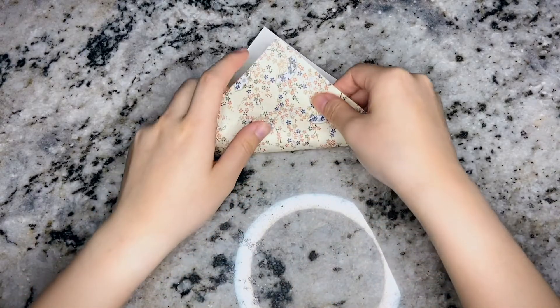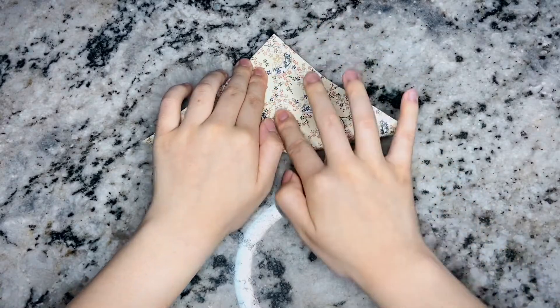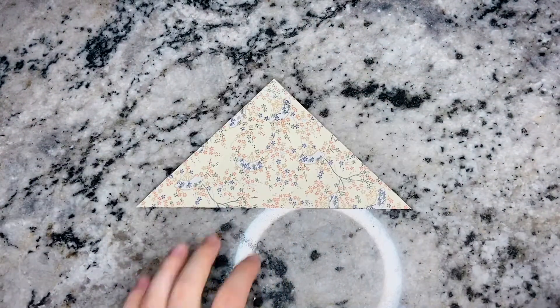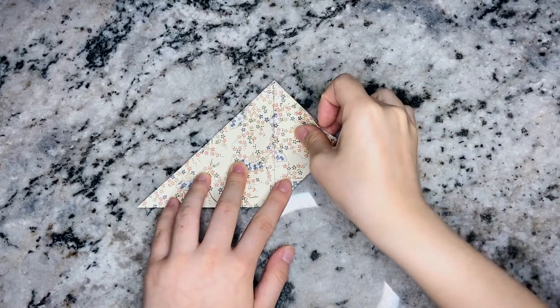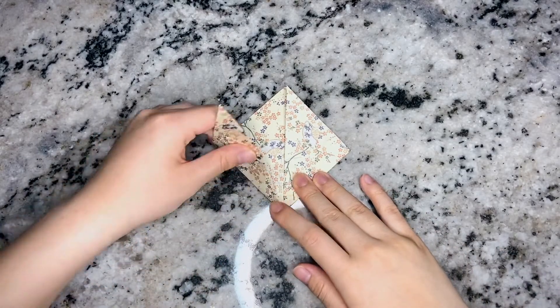Take your origami paper and fold it in half diagonally. Next, you want to fold the bottom right corner to the top corner. Do the same to the other side.